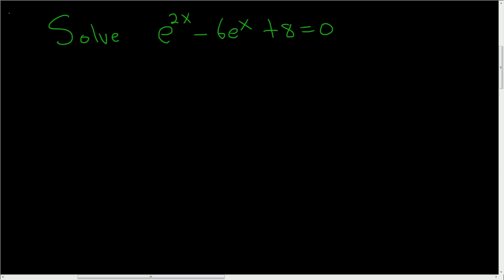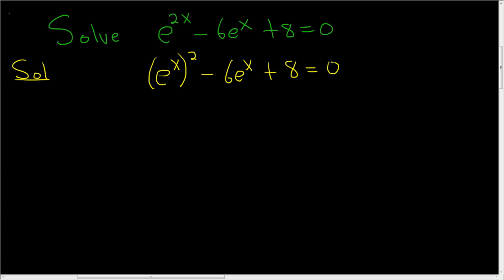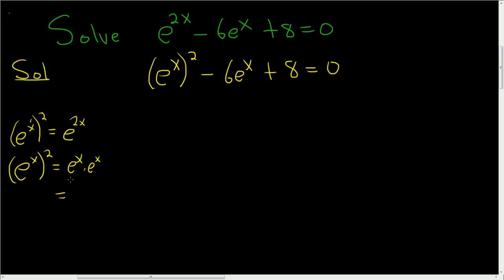We're being asked to solve this equation. The trick is to think of the equation as e to the x squared, minus 6 e to the x, plus 8 equals 0. Because e to the x squared is just e to the 2x — properties of exponents. Another way to think about it: e to the x squared is really e to the x times e to the x. When you have common bases and you're multiplying, you add the exponents, so x plus x gives you 2x.